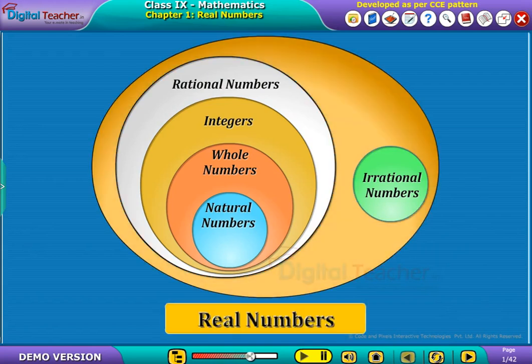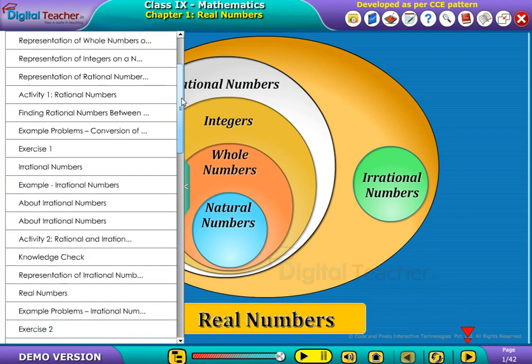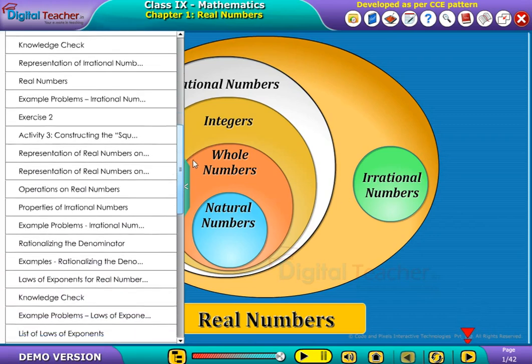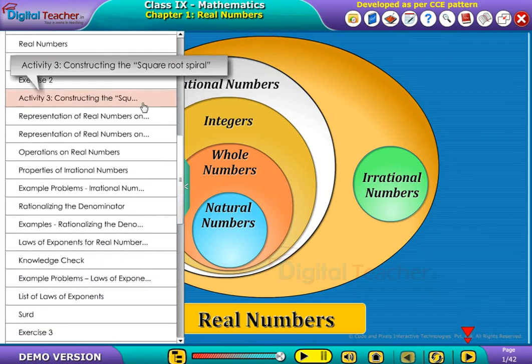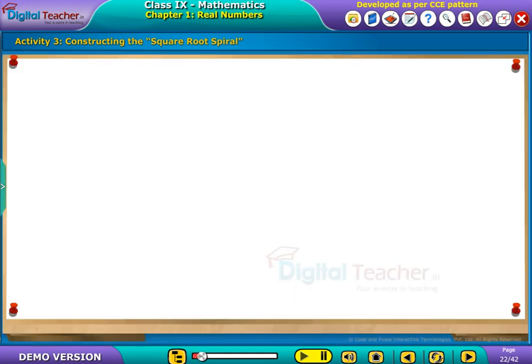Welcome to the chapter Real Numbers. Let us do an activity on constructing the square root spiral. Take a large sheet of paper, pencil and scale.